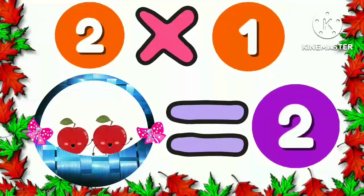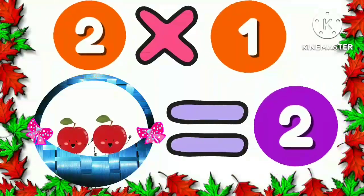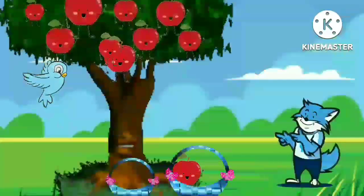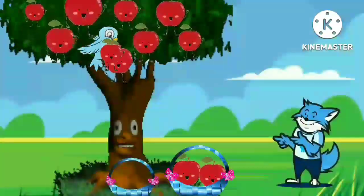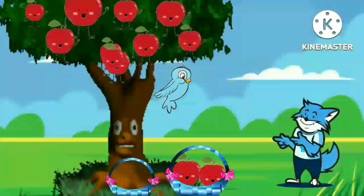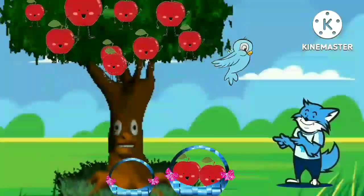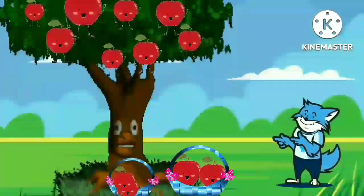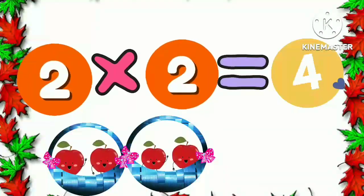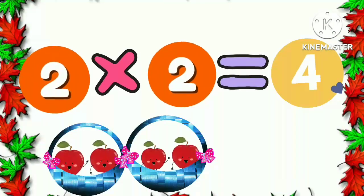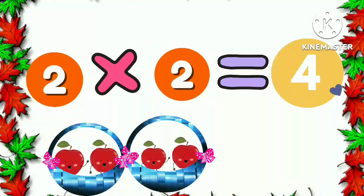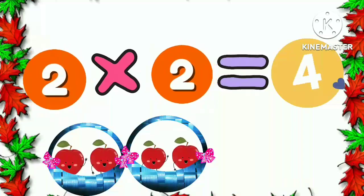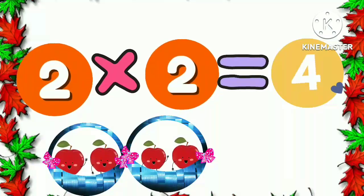Two one times is two. The bird came again and cut off two more apples. The apples fell into the second basket. Now we have two apples in each two baskets. Two two times is four.